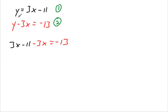So again, I just replace this y with 3x minus 11. And I wrote minus 3x equals negative 13. Now using simplification techniques and solving, we see that 3x minus 3x would go away, leaving us with negative 11 equals negative 13.